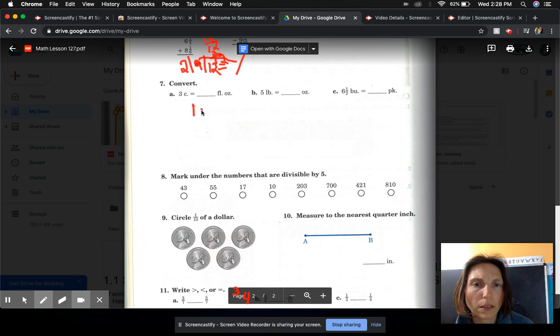I know you could probably do this in your head. And our special number is 8 ounces in a cup. And then 8 times 3 equals 24. So, 24 ounces.